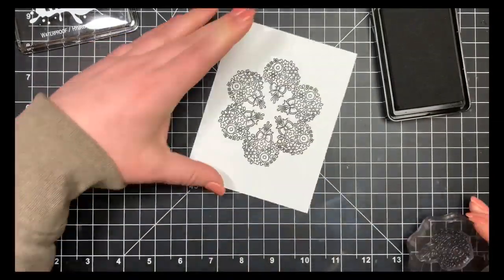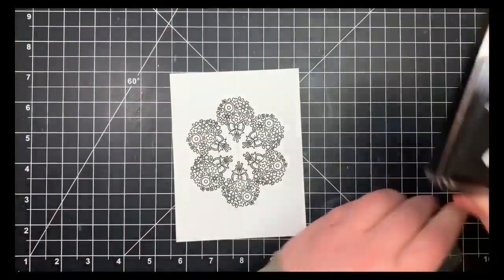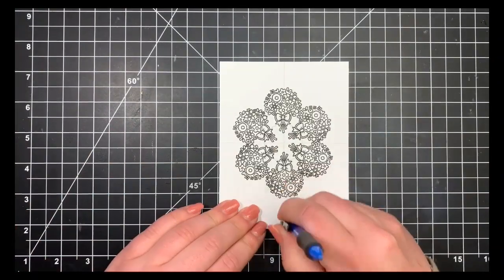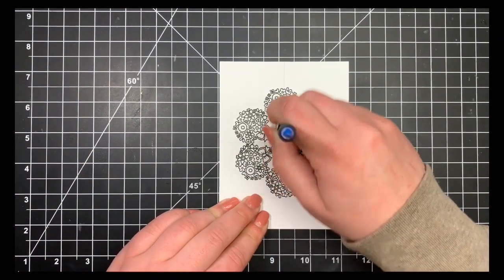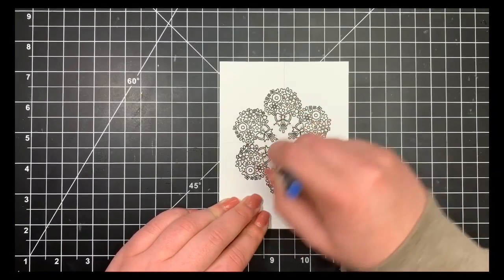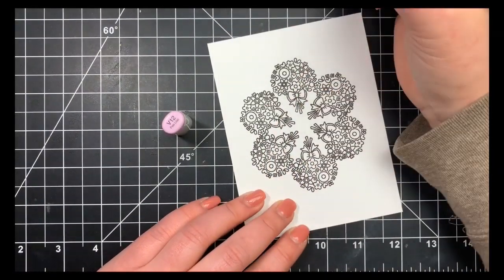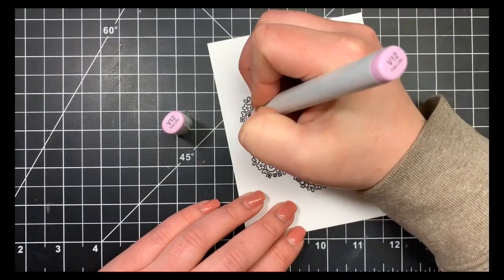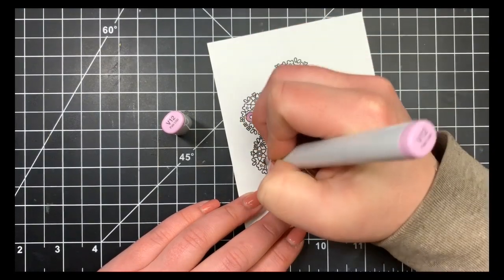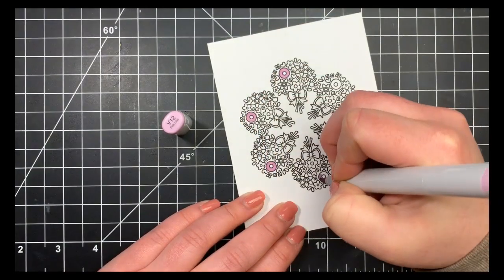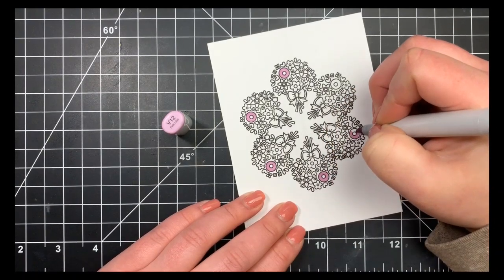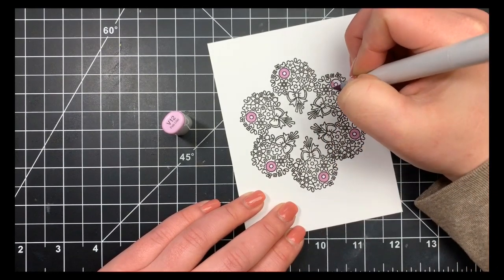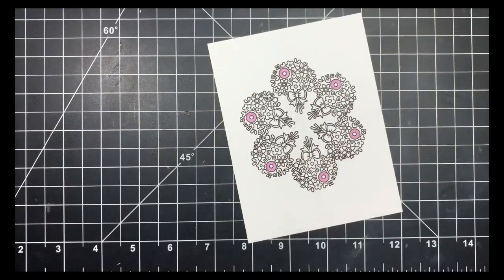Once that was stamped out, I'm going to erase all of my pencil lines. You want to do this before you start your coloring. We're going to keep the coloring very simple. The only shading I did was for the little bows, and honestly, I stamped these so close together it didn't make any difference.